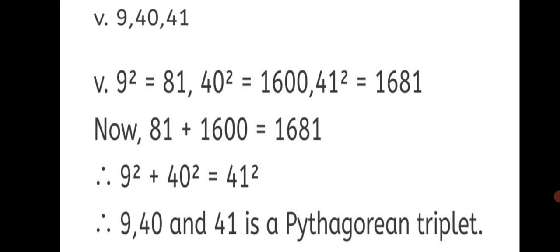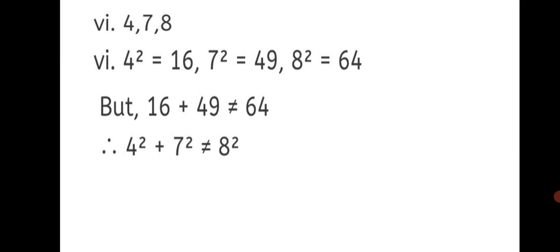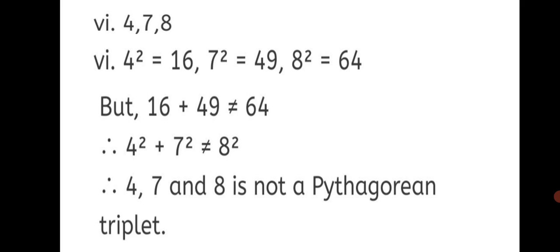Simply by writing the squares and adding the smaller squares, then checking with the bigger number's square, we can detect whether it is a Pythagorean triplet or not. Sixth question: 4, 7, 8. The squares: 4 square is 16, 7 square is 49, 8 square is 64. 16 plus 49 is not equal to 64. Therefore, 4 square plus 7 square is not equal to 8 square. Therefore, 4, 7, 8 is not a Pythagorean triplet. This completes Question 1 with all 6 sub-questions.